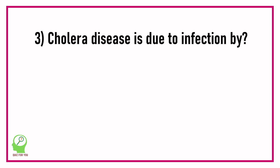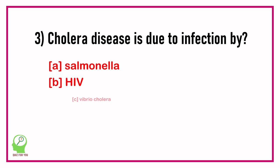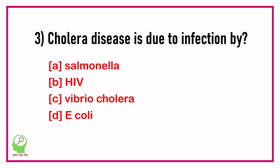Question number three: Cholera disease is due to infection by which of the following? Options are: Salmonella, HIV, Vibrio cholerae, E. coli.